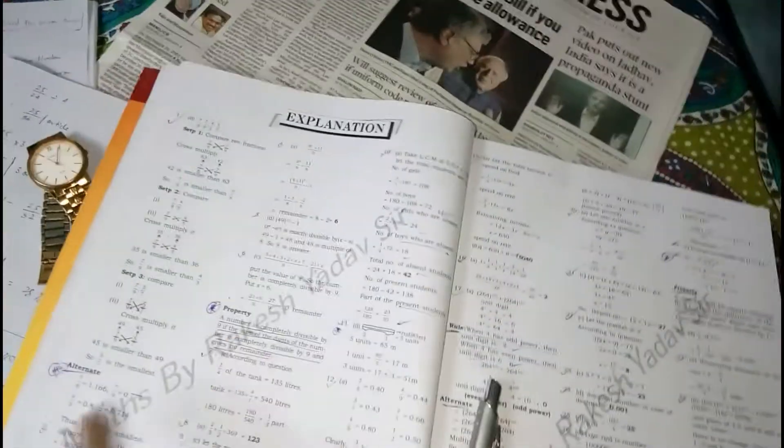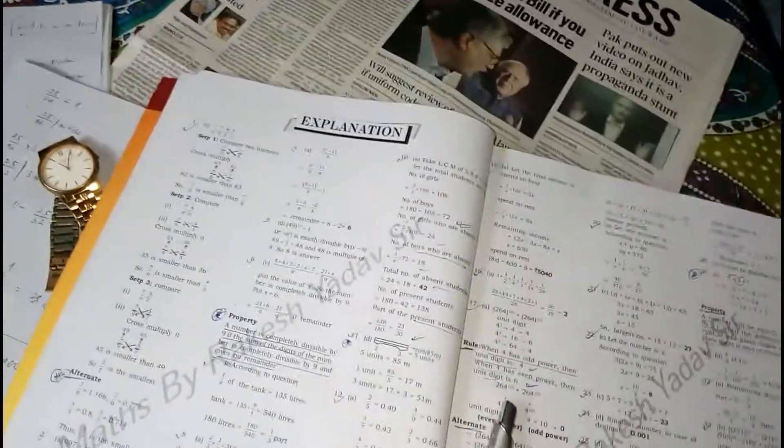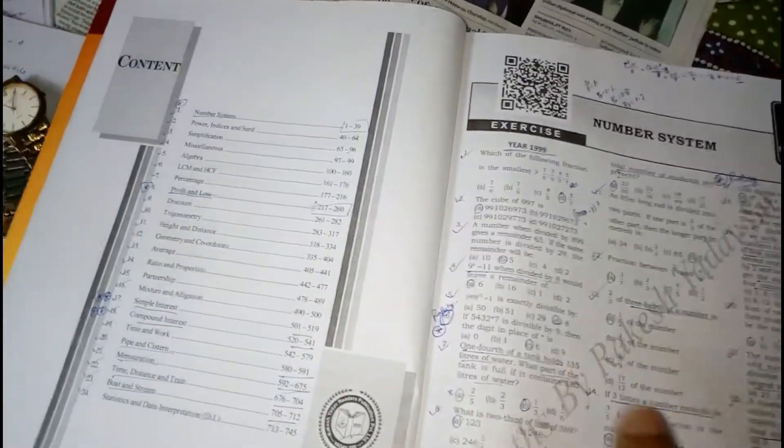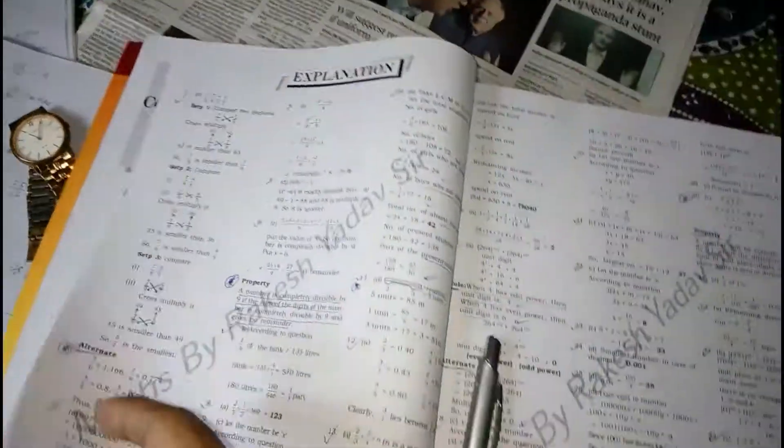So there is a property and you have to remember this property to solve this type of problem. If you remember this property then you will be able to solve any problem of this type. So the answer here is 6.